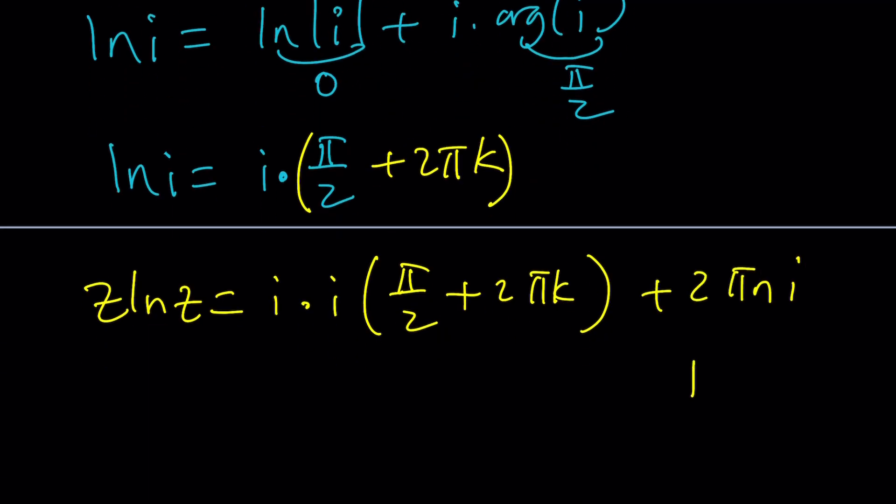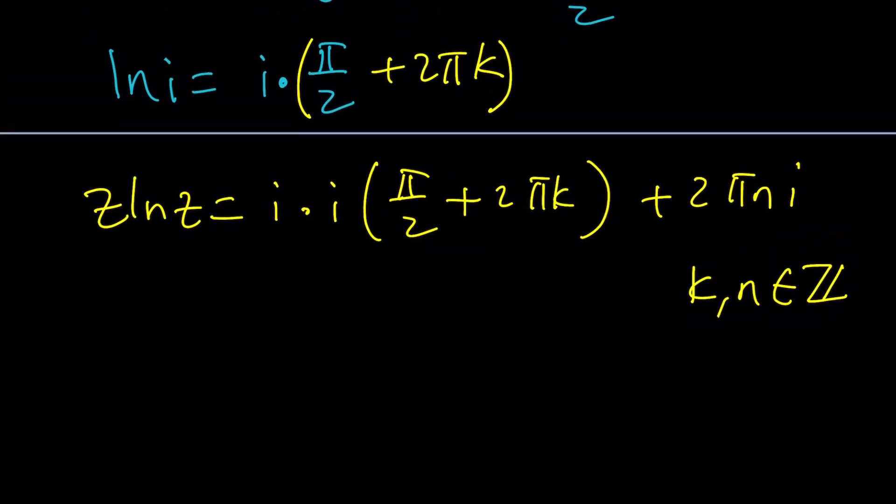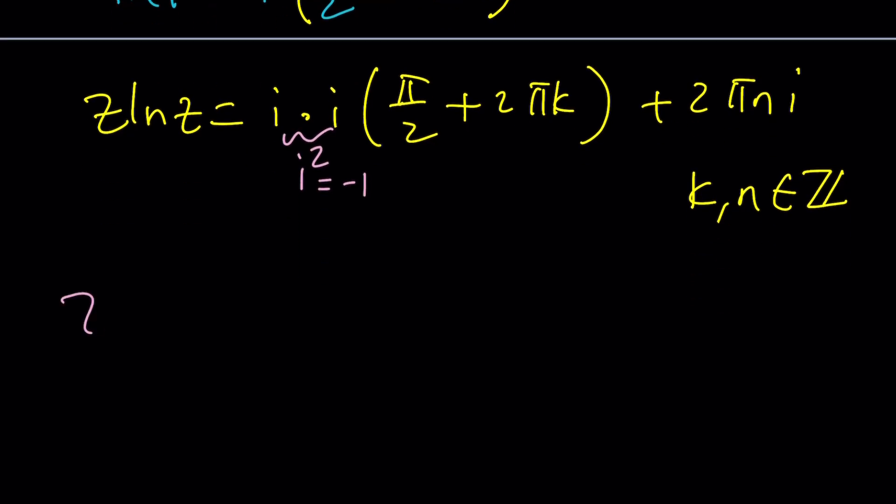By the way, I forgot to say, k and n are integers. You probably guessed that. Now, i times i is i squared, so that is negative 1. So that's just going to bring in a negative sign. z ln z is going to be negative pi over 2 minus 2 pi k. Notice that i is gone. Plus 2 pi n i.